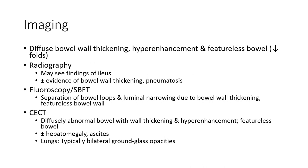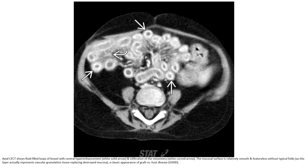Plus or minus ascites adjacent to the bowel, typically bilateral. On contrast-enhanced CT, fluid-filled bowel loops are found with central hyper-enhancement and infiltration of the submucosa. The mucosal surface is relatively smooth and featureless without typical mucosal folds, as this layer actually represents vascular granulation tissue replacing the normal stripe pattern — a classic appearance of graft-versus-host disease.